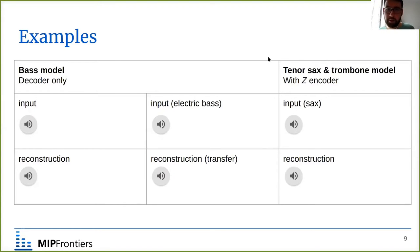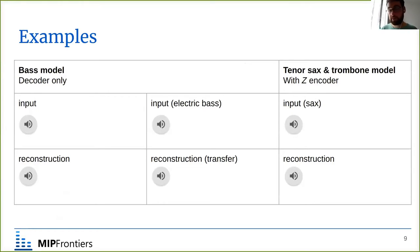What we did was train one model on two instruments at a time — tenor sax and trombone — because they have similar pitch ranges. We trained it with the set encoder, which is something not done in the original paper. As you might have heard, the model didn't really learn two separate instruments but rather a mashup between the two. When we investigated further, we found it was ignoring the residual features completely. It was just one experiment, so we couldn't determine why, but training with more data might help.